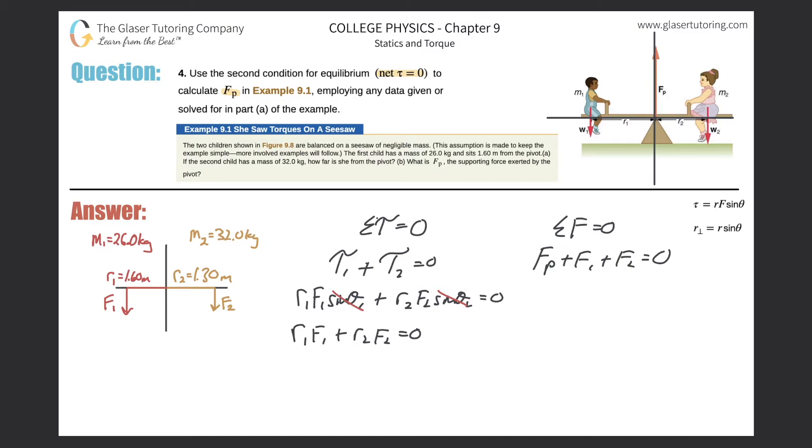So now what I need to do is I realize that I need to somehow get F sub P into this equation. So you can solve this equation for either F sub one or F sub two, it does not matter. I'm going to choose to solve it for F sub one.